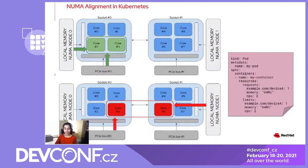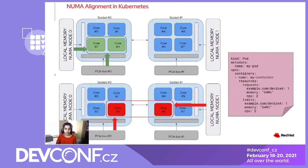At the node level, Topology Manager is a Kubernetes component that coordinates the topology of resources allocated, including CPUs and devices. Topology Manager has flexible policies and you can define scope for different resource alignment. It orchestrates CPU Manager, Device Manager, and Hugepages Manager, allowing workloads to run in an environment optimized for low latency. It has a set of node-level policies — for example, best effort, restricted, single NUMA node policy — and scope to define whether you want resource alignment at a pod level or container level. It gathers hints from resource managers and uses those along with the policies to align resources.